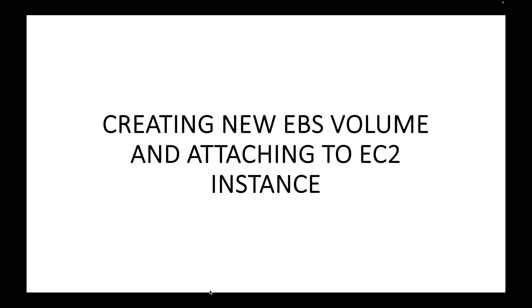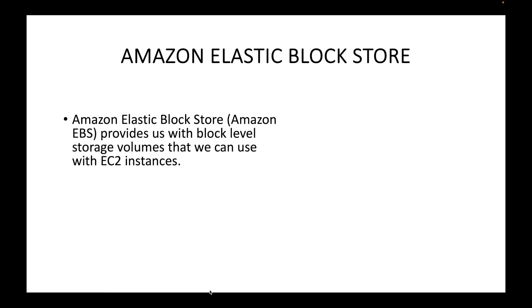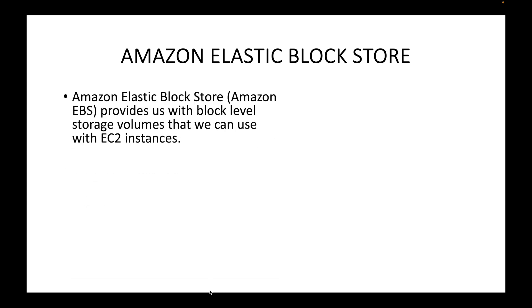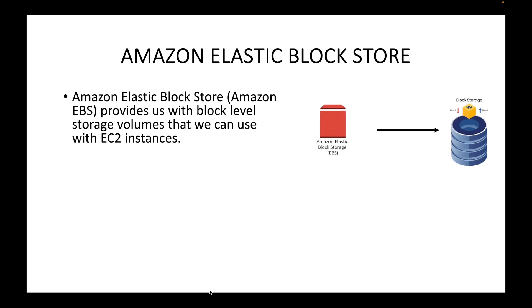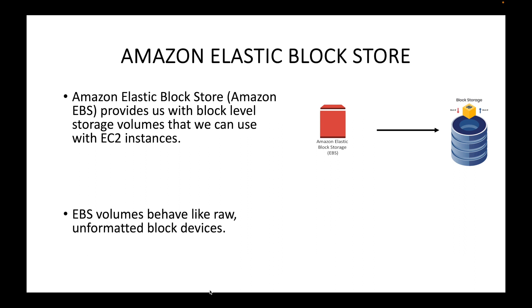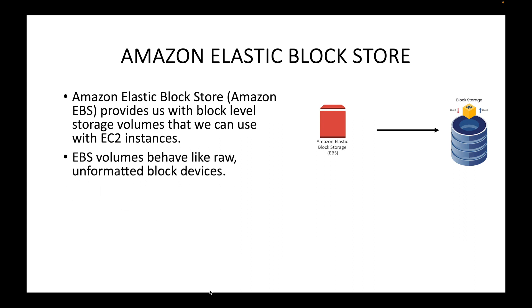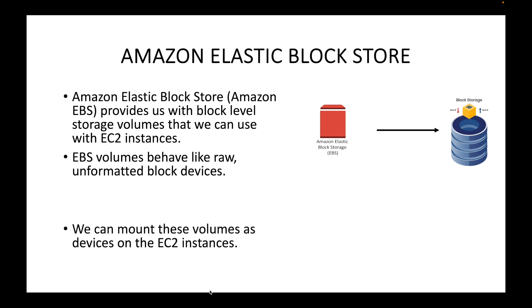Let's do a quick recap of what EBS is. EBS stands for Elastic Block Storage, and this simply provides us with block-level storage that we can attach to our EC2 instances. EBS is your block-level type of storage capacity, and these EBS volumes behave like raw unformatted block devices that we can mount to your EC2 instances.